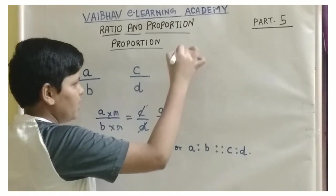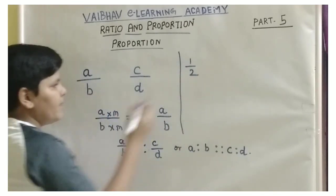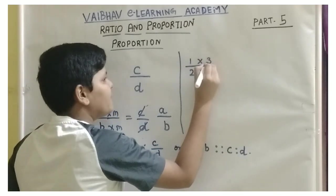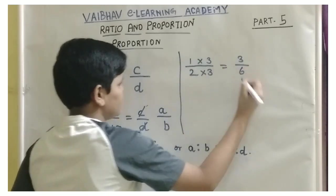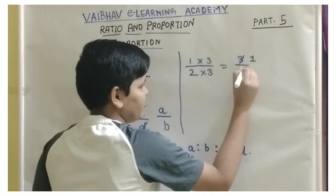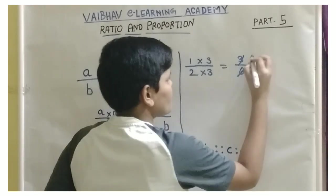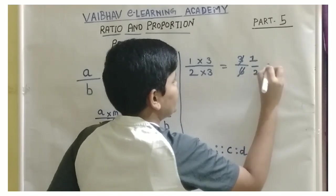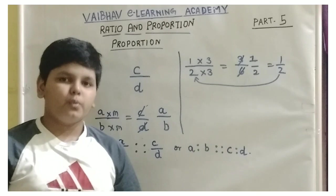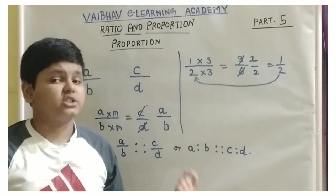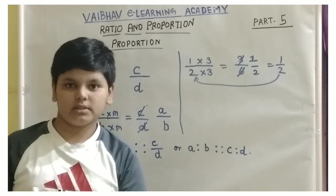Let us take an example where a by b is 1 by 2 and our constant m is 3. If 1 is multiplied by 3 and 2 is multiplied by 3, we get 3 by 6. If we simplify this — 3 divided by 6 — we get 1 by 2, which was our original fraction. So if any two fractions or ratios simplify to the same value, we can say those ratios are proportional. This was the basic introduction to what is a proportion.